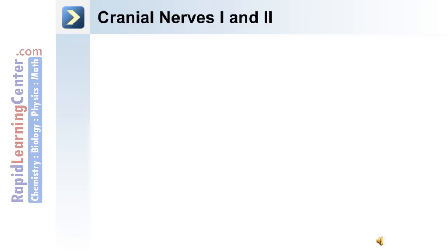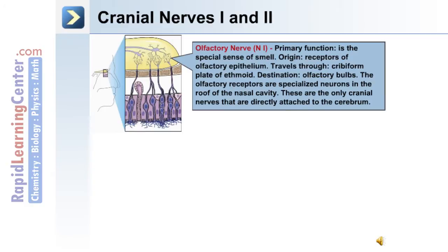Now we'll discuss each of the 12 cranial nerves including its origin and function. Cranial nerve number one is the olfactory nerve, and its primary function is the special sense of smell. The origin of this nerve is the receptors of the olfactory epithelium, and it travels through the cribriform plate of the ethmoid bone. The destination is the olfactory bulbs. The olfactory receptors are specialized neurons in the roof of the nasal cavity, and these are the only cranial nerves directly attached to the cerebrum.